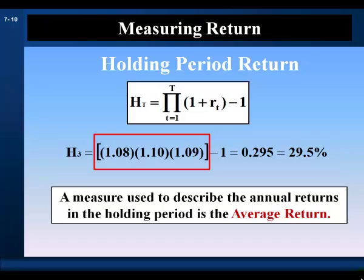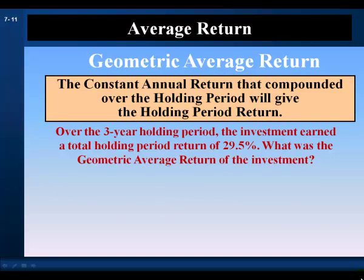Suppose we want a measure that describes the annual returns within a holding period. A measure used for this purpose is the average return, also called the mean return — the two terms are used interchangeably. There are two types of average returns. The first is the geometric average return, also called the geometric mean return or compound annual return. It is the constant annual return that, when compounded over the holding period, gives the holding period return — an average that accounts for compounding.